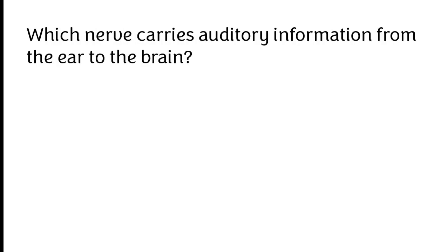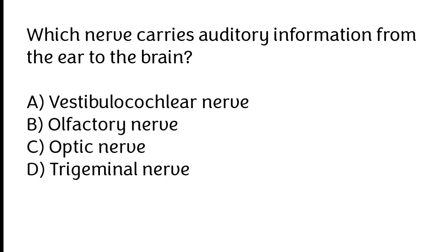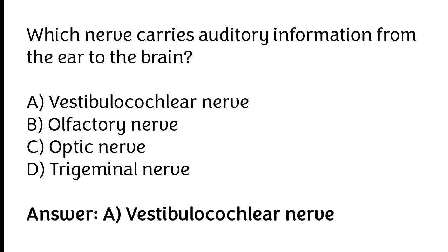Which nerve carries auditory information from the ear to the brain? Vestibulocochlear nerve, olfactory nerve, optic nerve, trigeminal nerve. The correct answer is option A — the vestibulocochlear nerve carries auditory information from the ear to the brain.